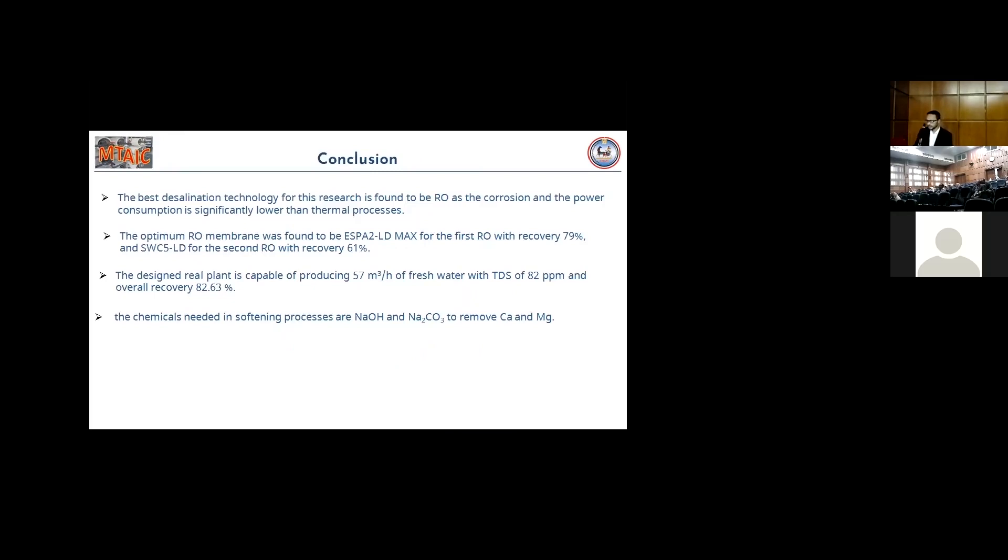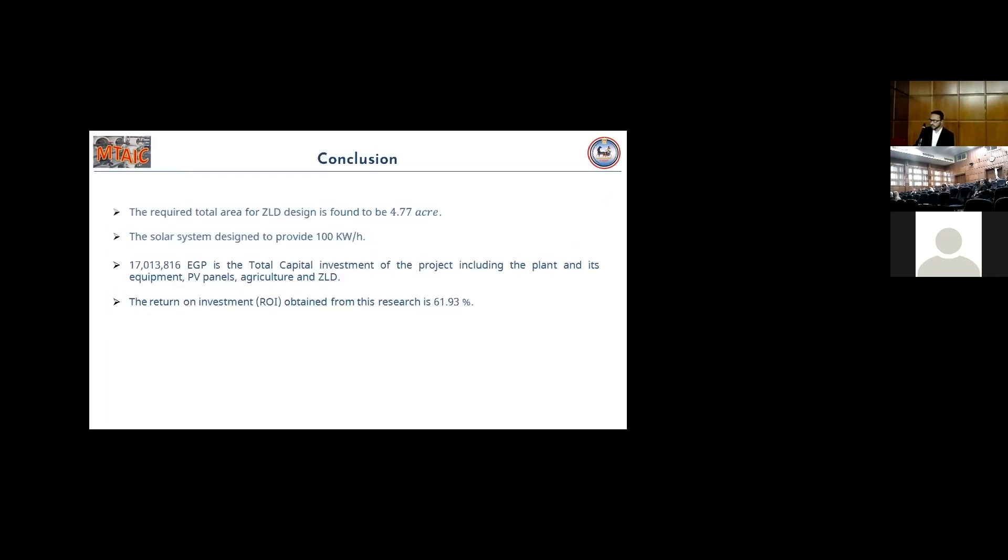The conclusions: The best desalination process is found to be RO. The optimum RO membrane is found to be SBA2LAD max for the first RO, and SCWC5LAD for the second RO, producing 55 to 57 cubic meters per hour. The chemicals needed in the softening process are sodium hydroxide and sodium carbonate. The required total area for ZLD is 4.17 hectares. The solar system designed to provide 102 kilowatts per hour. 17 million is the total capital investment of the project, including the land, 50 feddans. The return on investment is almost 62 percent.